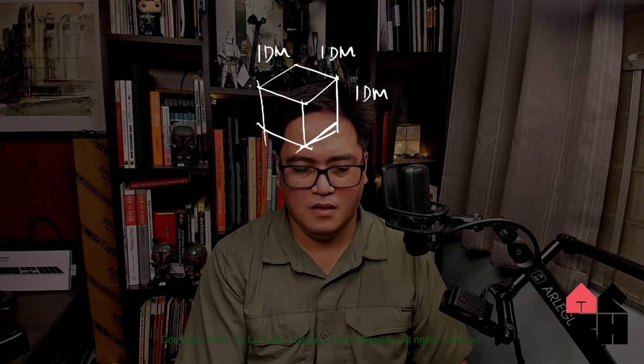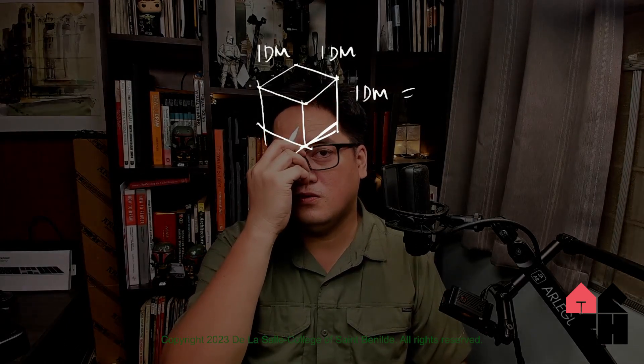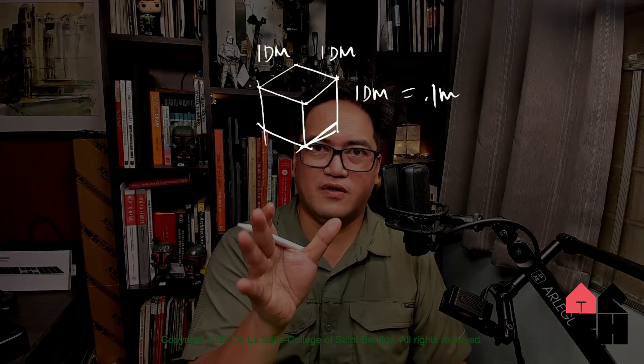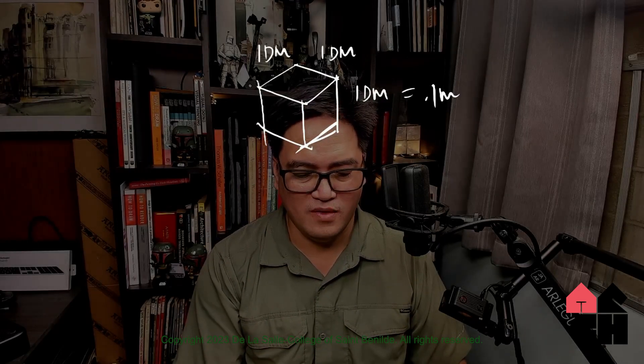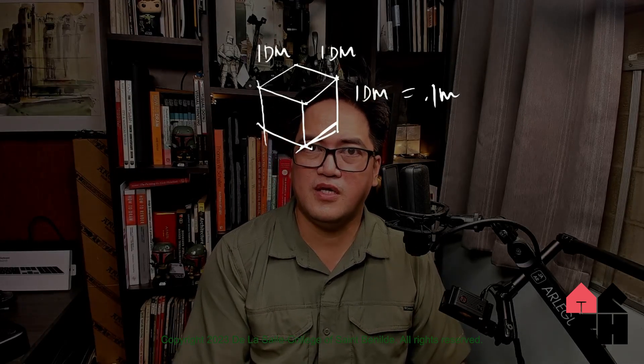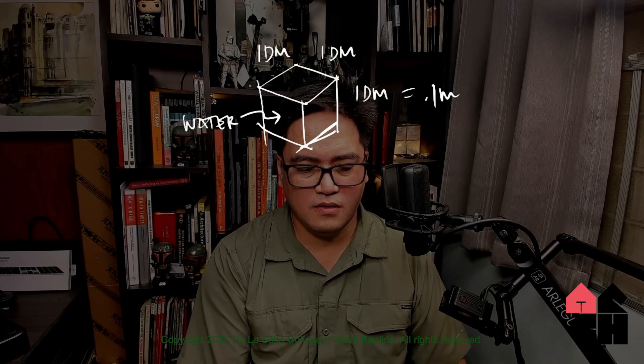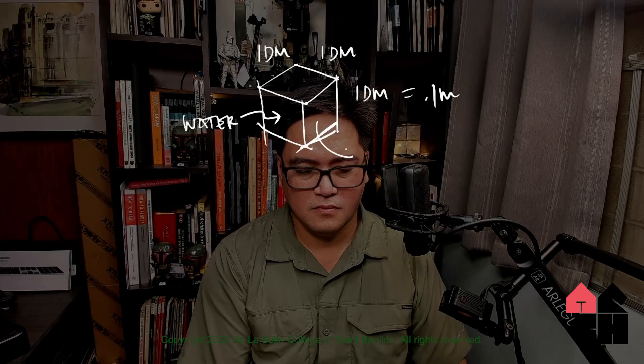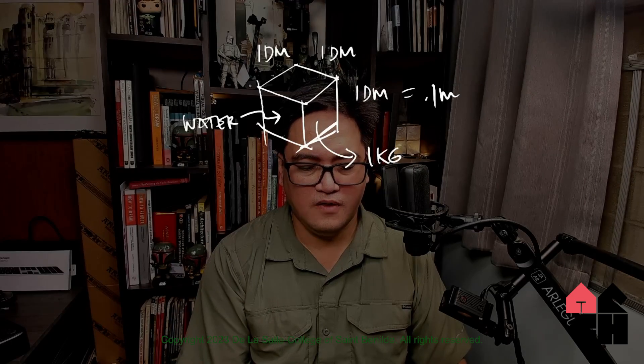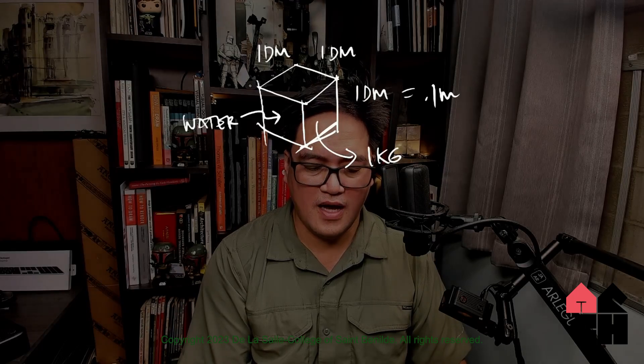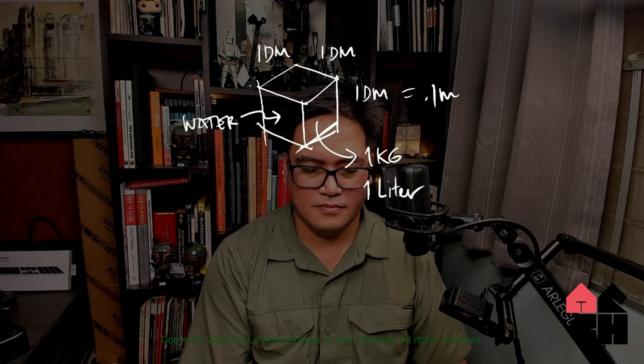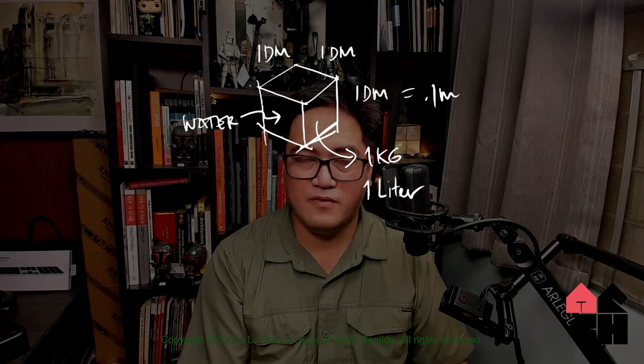One decimeter is equivalent to 0.1 meters. If we have a cube with this dimension made of water, the weight of this would be one kilogram and the volume would be considered as one liter. So this is how it's derived.